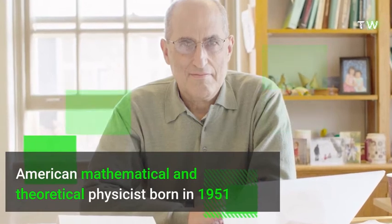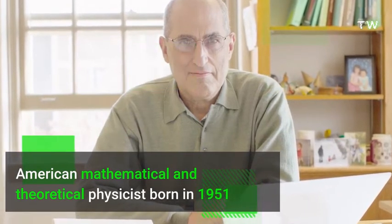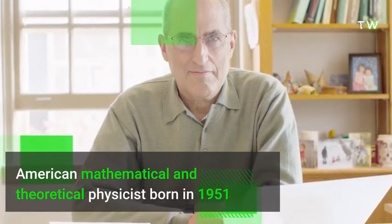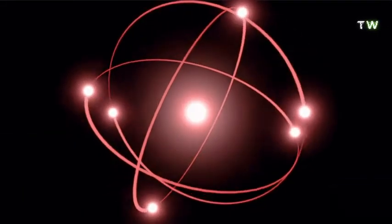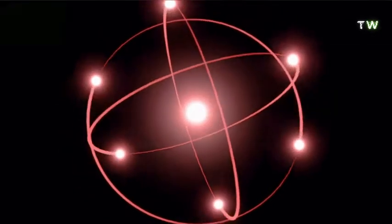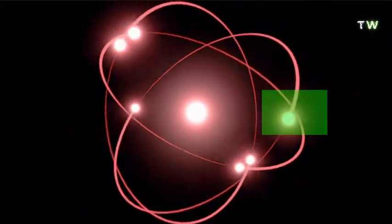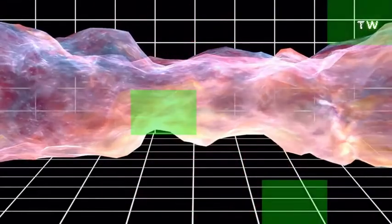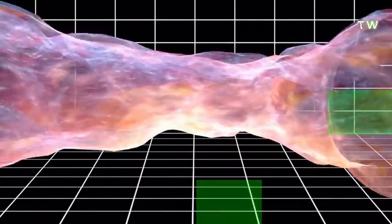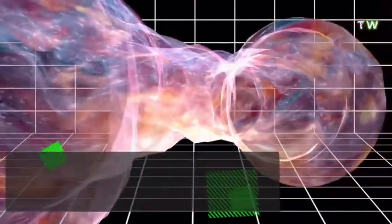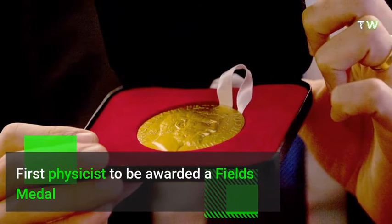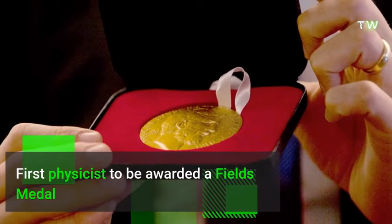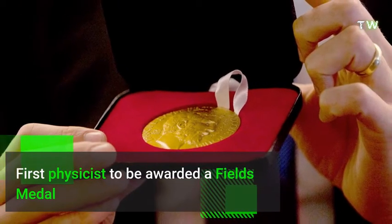Number 6. Edward Witten is an American mathematical and theoretical physicist. He was born in 1951 and is most well-known for his research into string theory, quantum gravity, and supersymmetric quantum field theories. He is considered the practical founder of M-theory, a theory that unifies many branches of superstring theory. He was the first physicist to be awarded a Fields Medal by the International Mathematical Union for coming up with a proof of the Positive Energy Theorem in 1981.